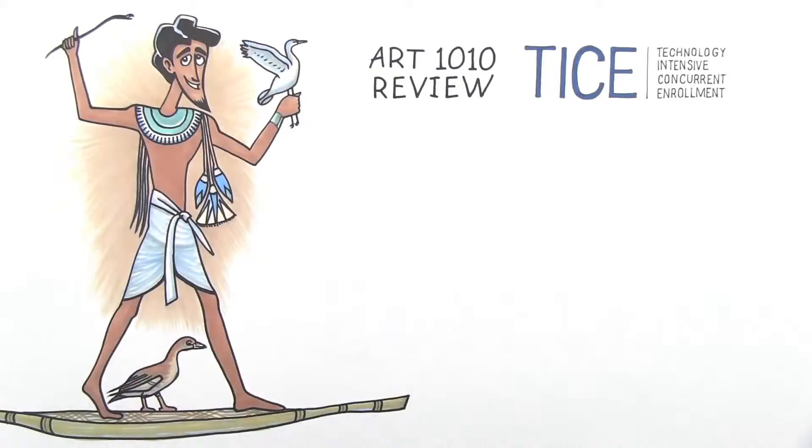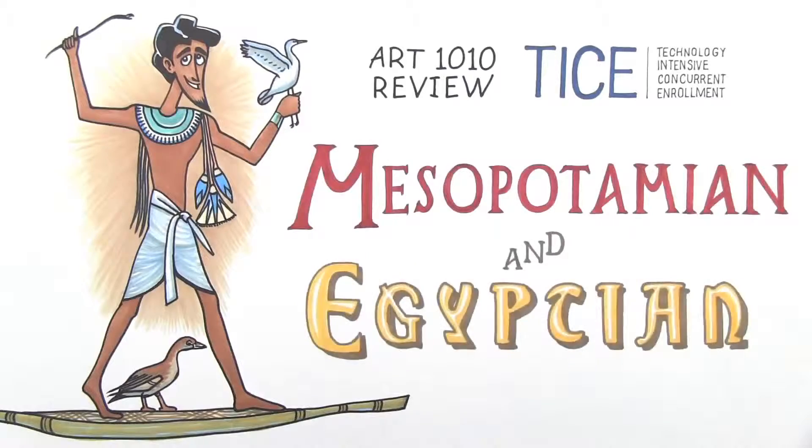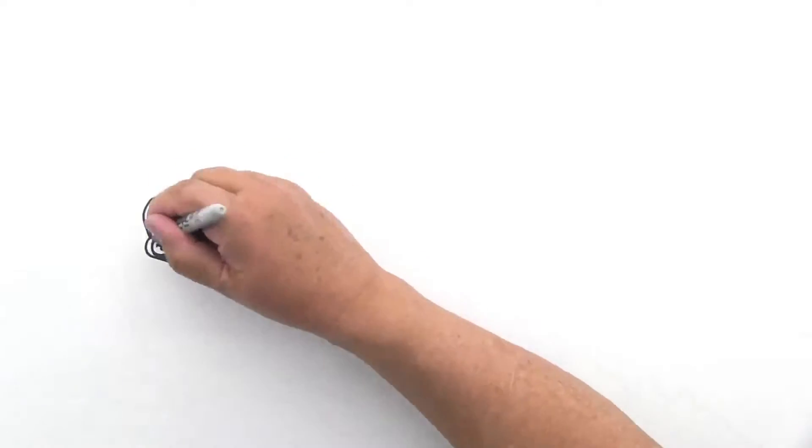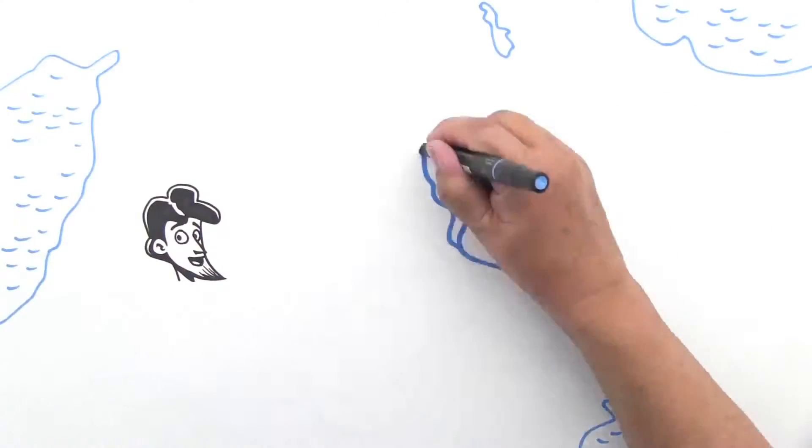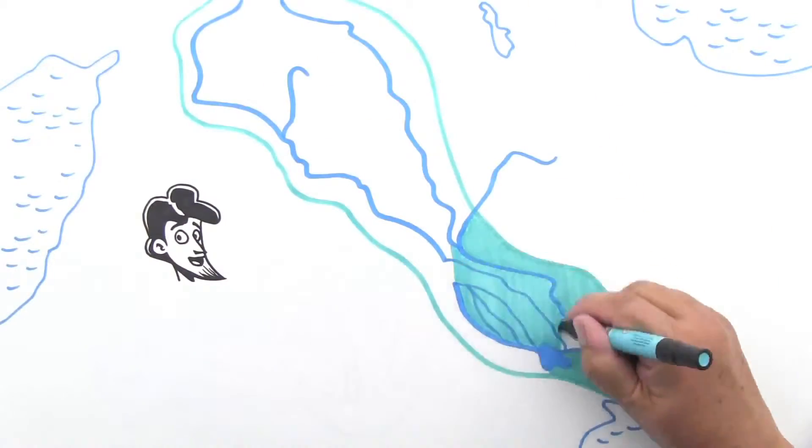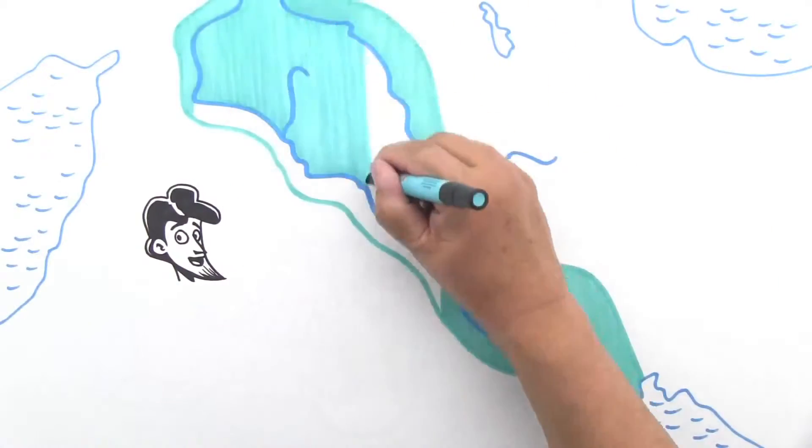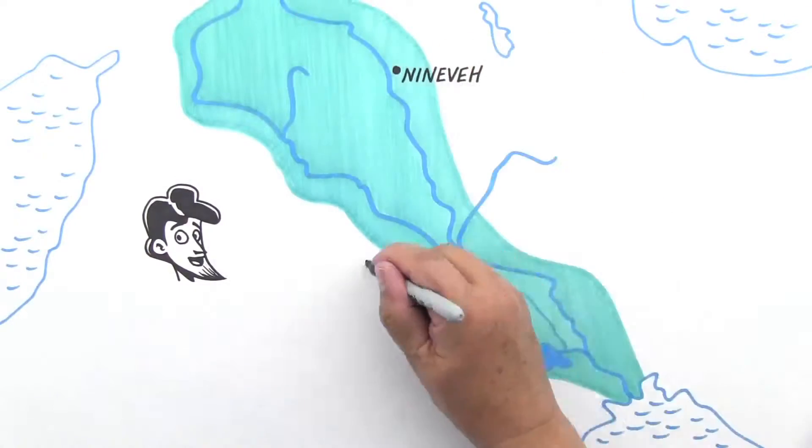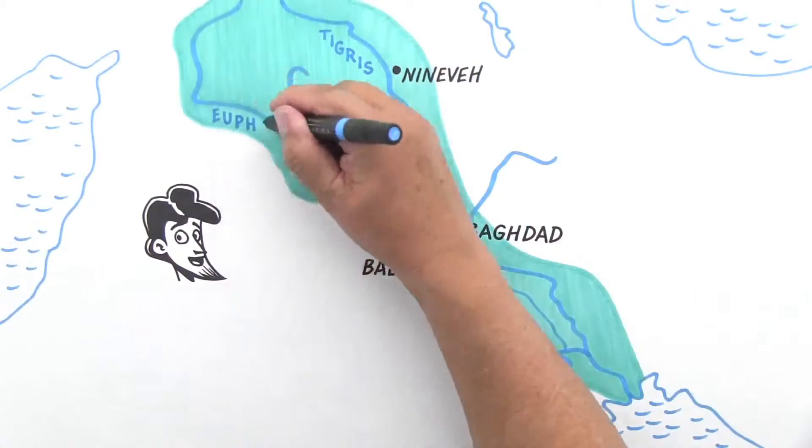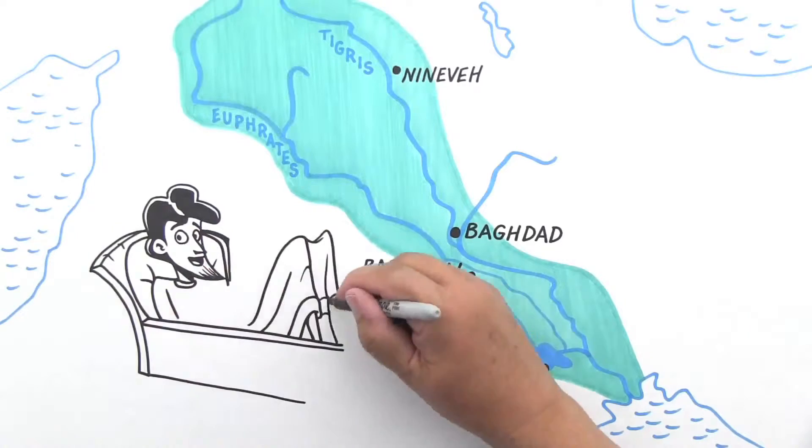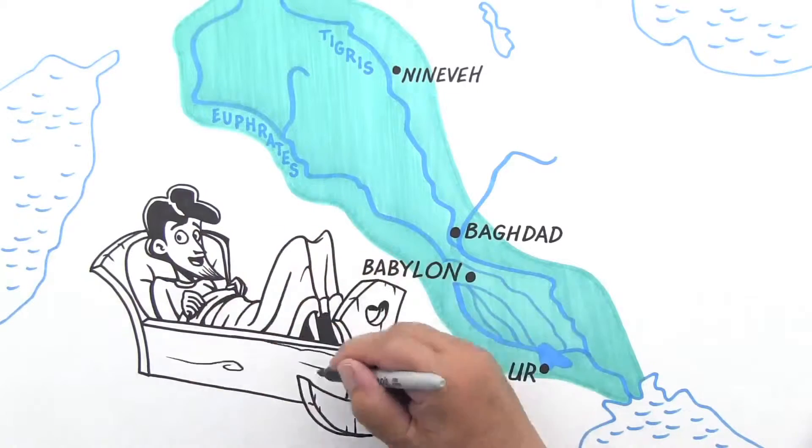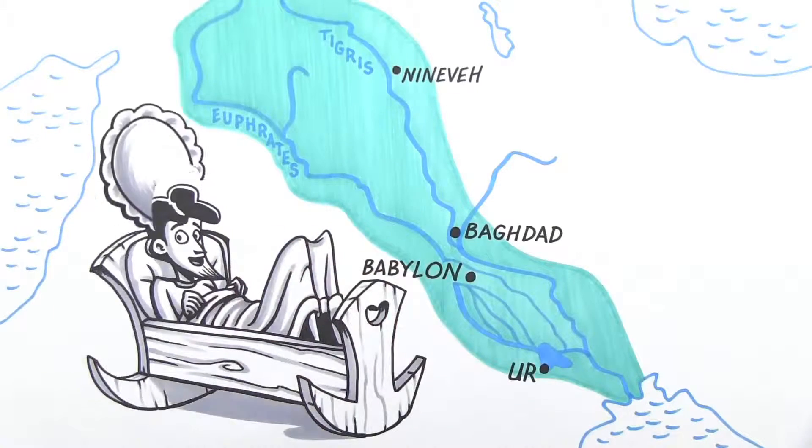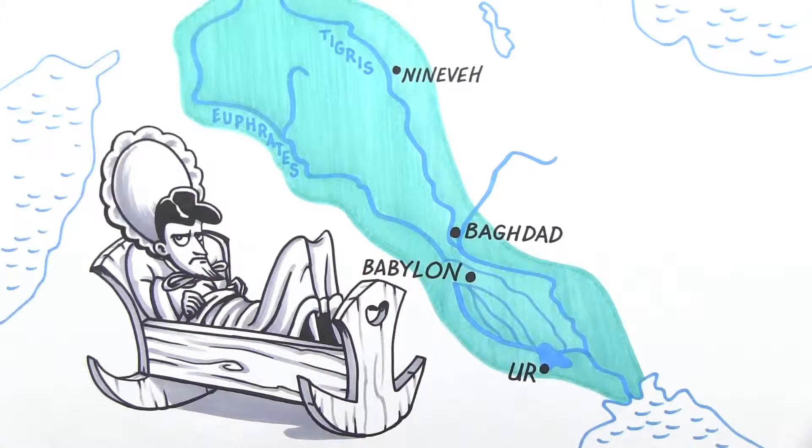It looks like we'll be talking about the Mesopotamian and Egyptian period. We're going back 5,000 years to a place the Greeks called Mesopotamia, which means land between the rivers. Those rivers were the Tigris and the Euphrates, which formed a fertile crescent, sometimes called the Cradle of Civilization. Very funny.